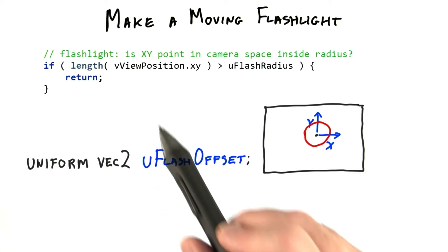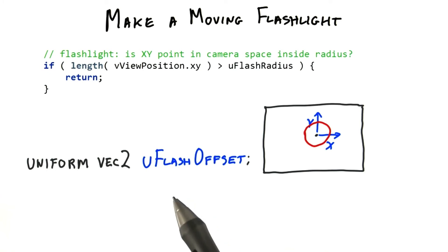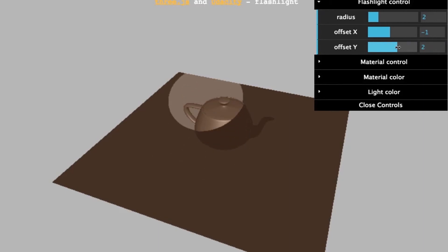If the X, Y viewposition and this location are close enough together, the flashlight should illuminate the surface. Your job is to change this code. When you're done, the sliders should move the flashlight around.